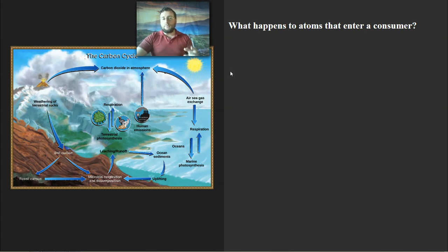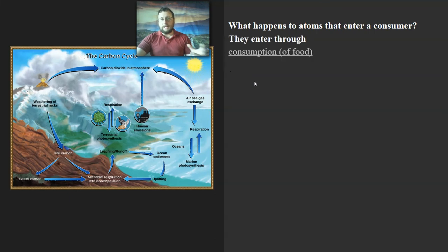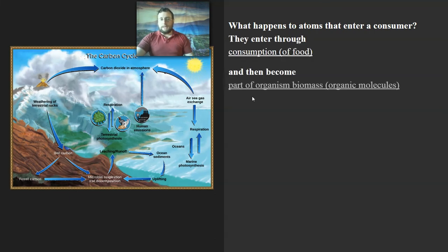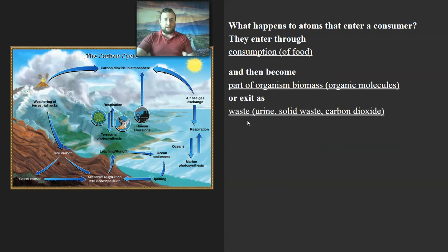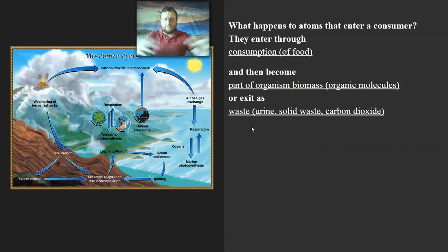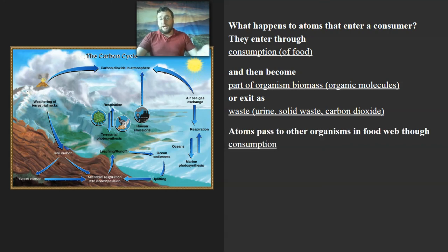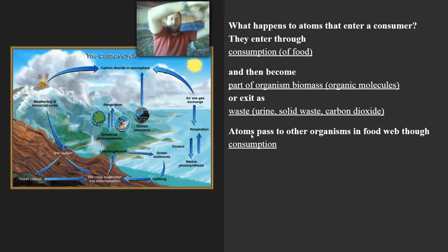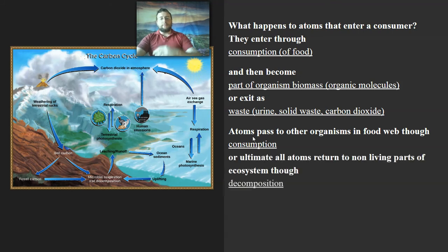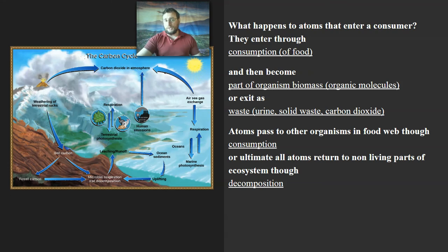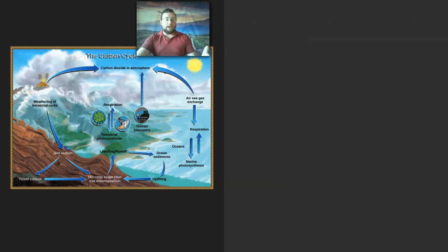As consumers eat, they get the atoms — the matter. Those atoms become part of the organism or are released as waste in urine, solid waste, or as carbon dioxide through the lungs, gills, or just diffusing out of the body. Atoms pass from organism to organism through consumption throughout the food web, transferring matter and the energy stored in food. But ultimately, all atoms return back to the non-living parts of the ecosystem through decomposition — decomposers break down both the waste and the carcasses. Some of that goes to the air and some to the soil.